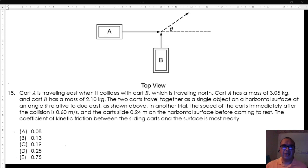18. Cart A is traveling east when it collides with cart B, which is traveling north. Cart A has a mass of 3.05 kilograms, and cart B has a mass of 2.10 kilograms. The two carts travel together as a single object on a horizontal surface at an angle theta relative to due east, as shown above.